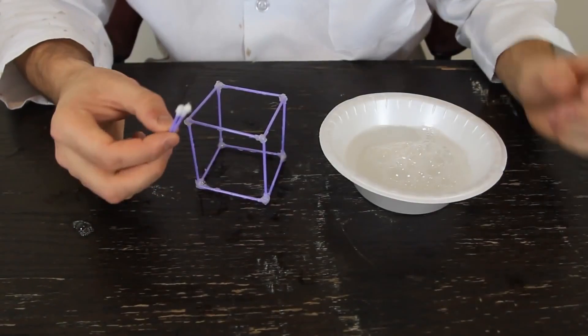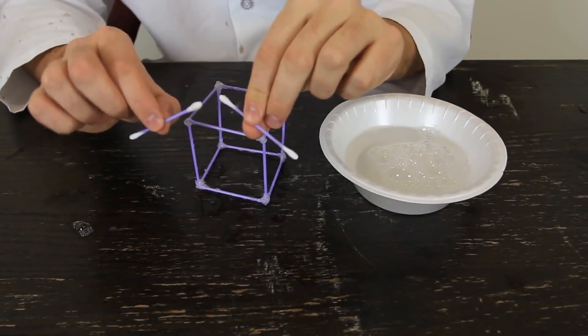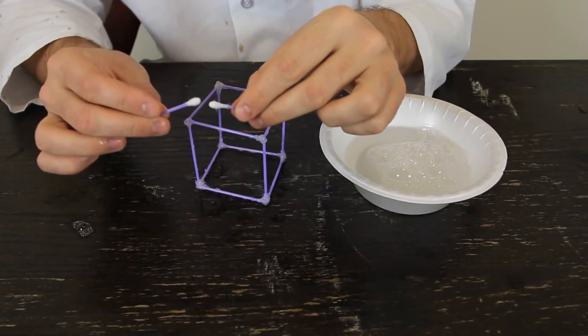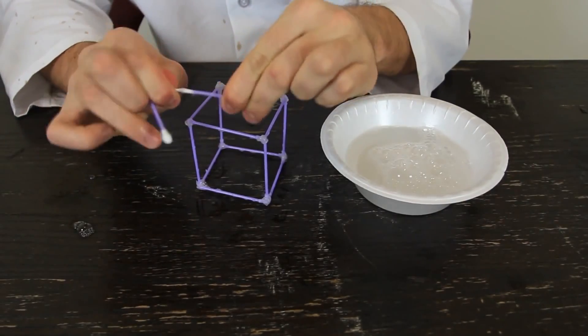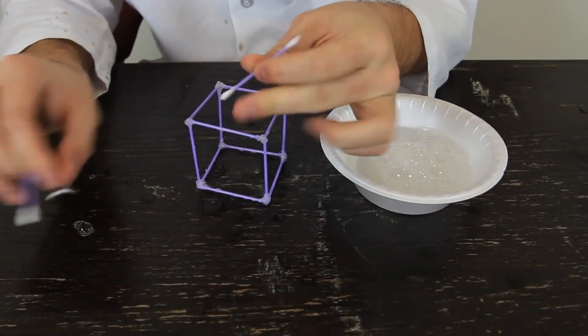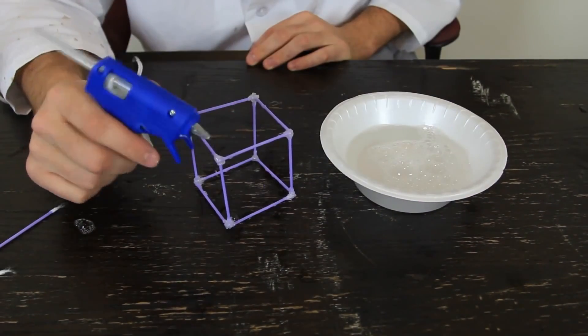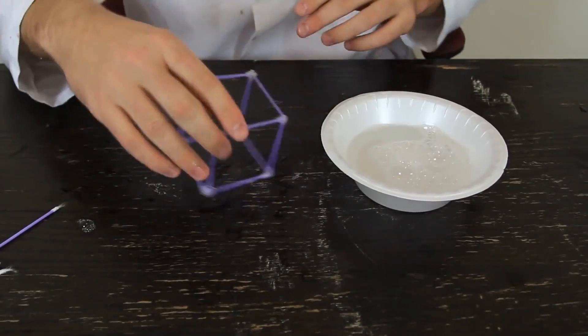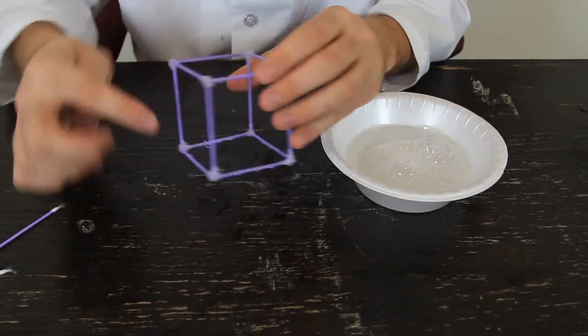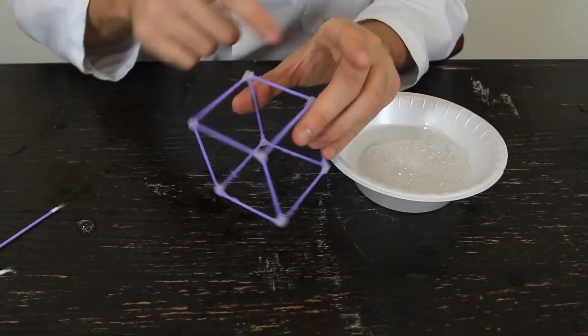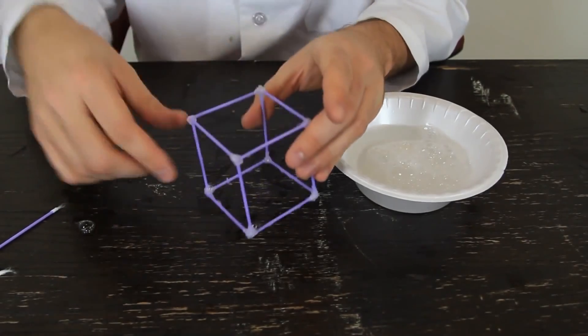For this experiment, you're going to need q-tips like that, 12 of them, and you want to glue them together. As you can see, I just grabbed it and took out all this part and glued them together with hot glue. It is super simple, just make a square, glue them together with the top ones.